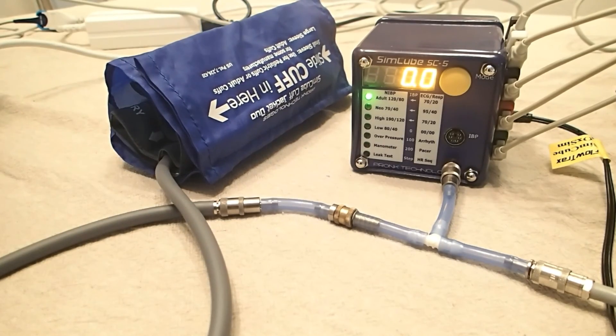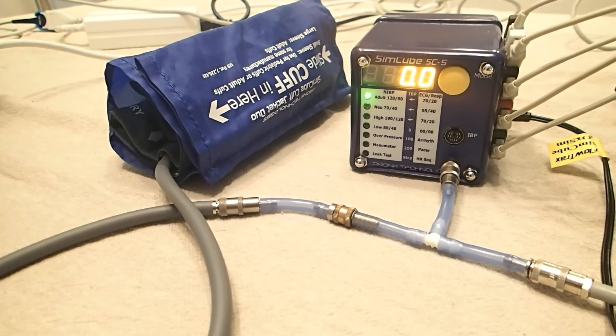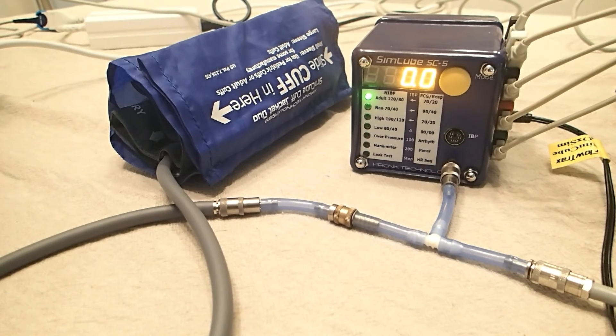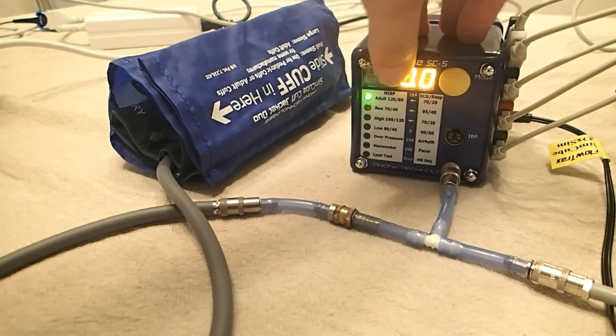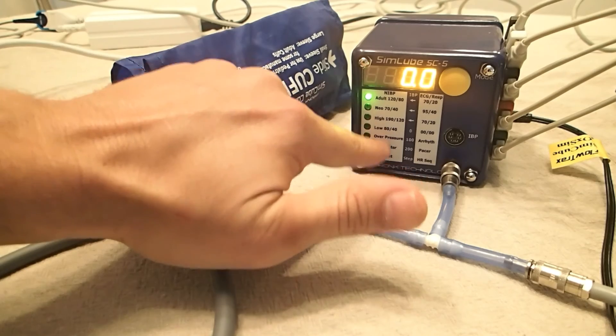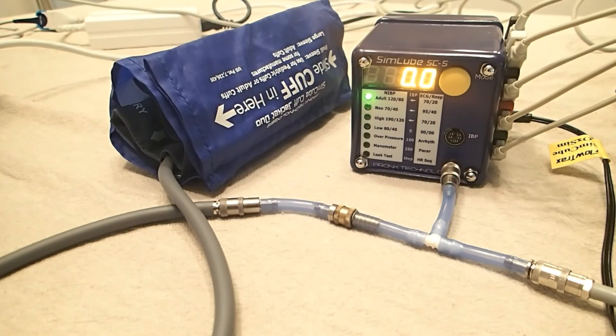Now everything's set up. Whenever we're ready to run our non-invasive blood pressure measurement from the device, we want to make sure we've set this up correctly here and chosen the NIBP measurements that we're looking for. We're going to leave it at adult 120 over 80 right now.